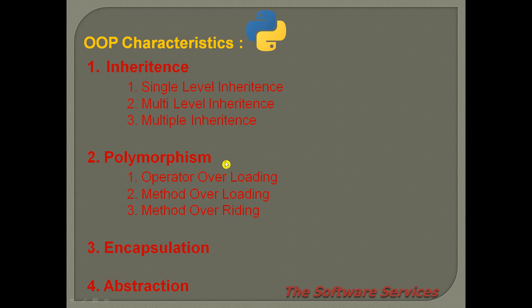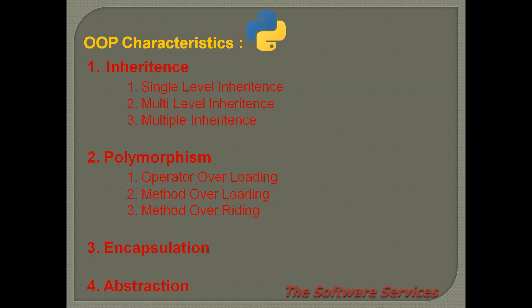Polymorphism means many forms — the same thing used for different purposes in different situations.